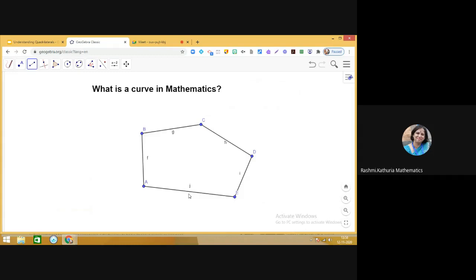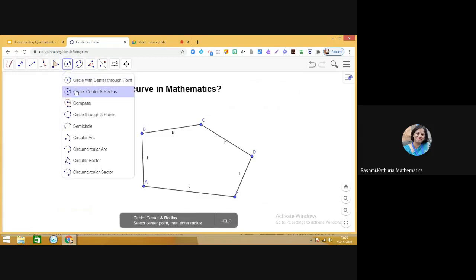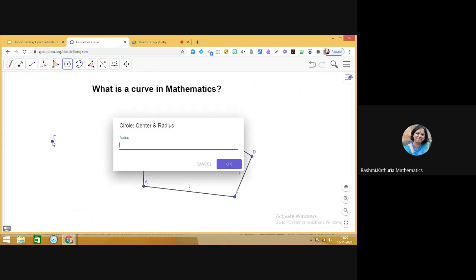Basically, simple closed curves which are made up of only line segments are known as polygons. Is it fine? Okay, now I am trying to draw another one. You see this?